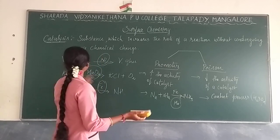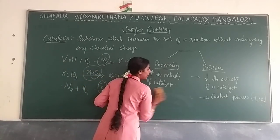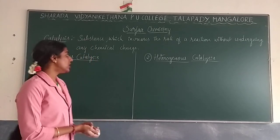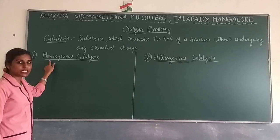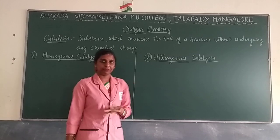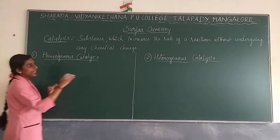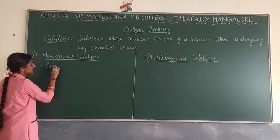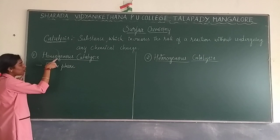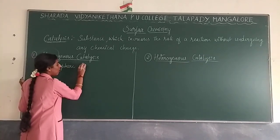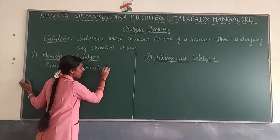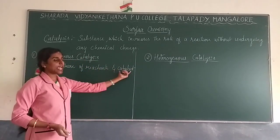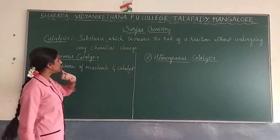Next we study the types of catalysis. Generally two types are present: homogeneous catalysis and heterogeneous catalysis. 'Homo' means same, so in homogeneous catalysis the reactants and catalyst are in the same phase. 'Hetero' means different, so in heterogeneous catalysis the reactants and catalyst are in different phases.